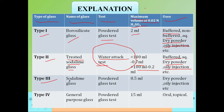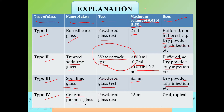Type 3 glass is soda-lime glass; its test is the powdered glass test; the H₂SO₄ volume needed is 8.5 mL; it is used for dry powder and oily injections. Type 4 glass is general-purpose glass; its test is the powdered glass test; H₂SO₄ volume needed is 15 mL; and it is used for oral and topical preparations.